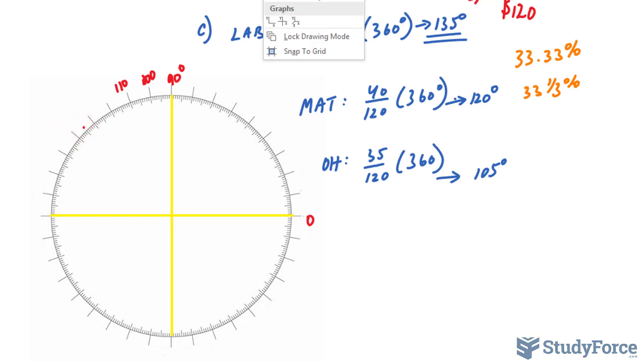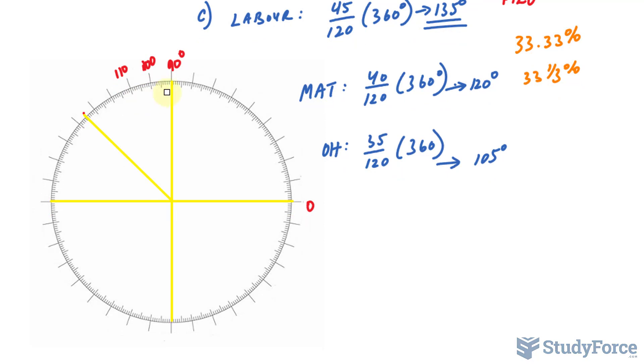So connect the center of the circle to this point. And everything, watch me erase this line, everything from 0 to that point represents labor. And you can fill that in with any color.